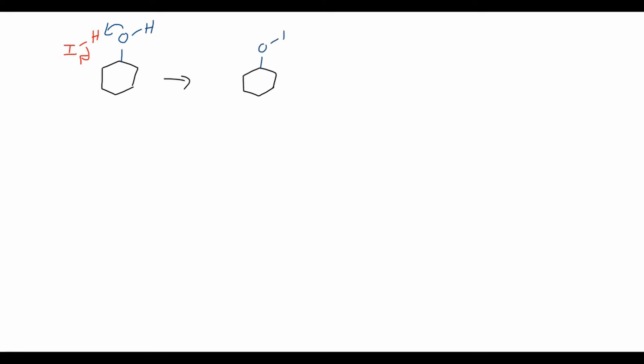And then because we have a secondary alcohol, this will form a rather stable carbocation. So we know that secondary carbocations are stable enough to form. So we can just have this water leave, and this will give us the secondary carbocation. And because I- is actually a very good nucleophile, the I- can actually just attack the secondary carbocation, giving us cyclohexanol iodide in an SN1 process.